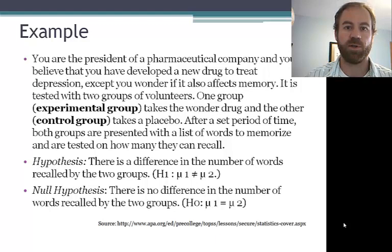After a set period of time, both groups are presented with a list of words to memorize, and they're tested on how many words they can recall. So your hypothesis is that there is a difference in the number of words recalled by the two groups. The null hypothesis is that there will be no difference between the number of words recalled by the two groups.